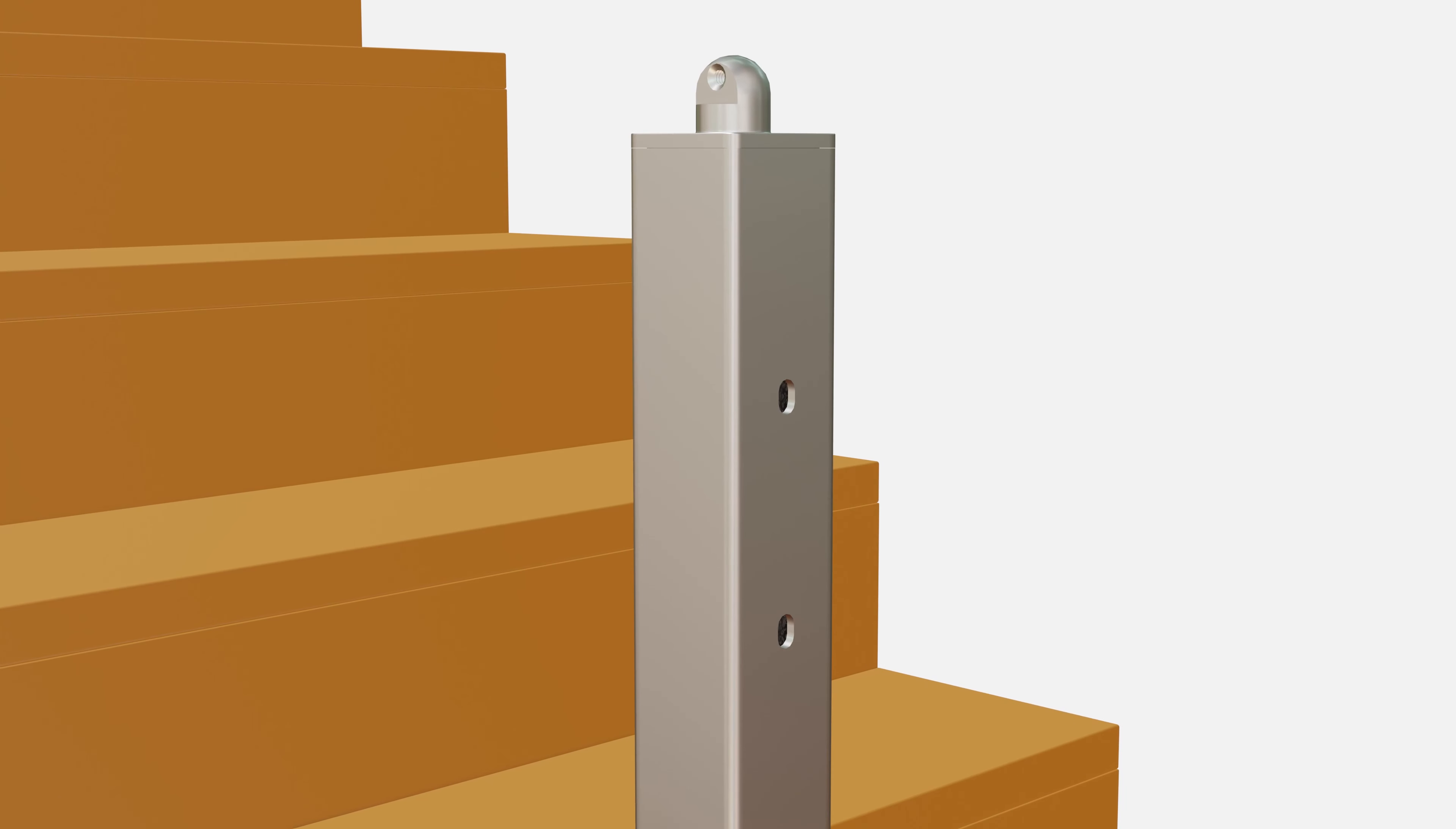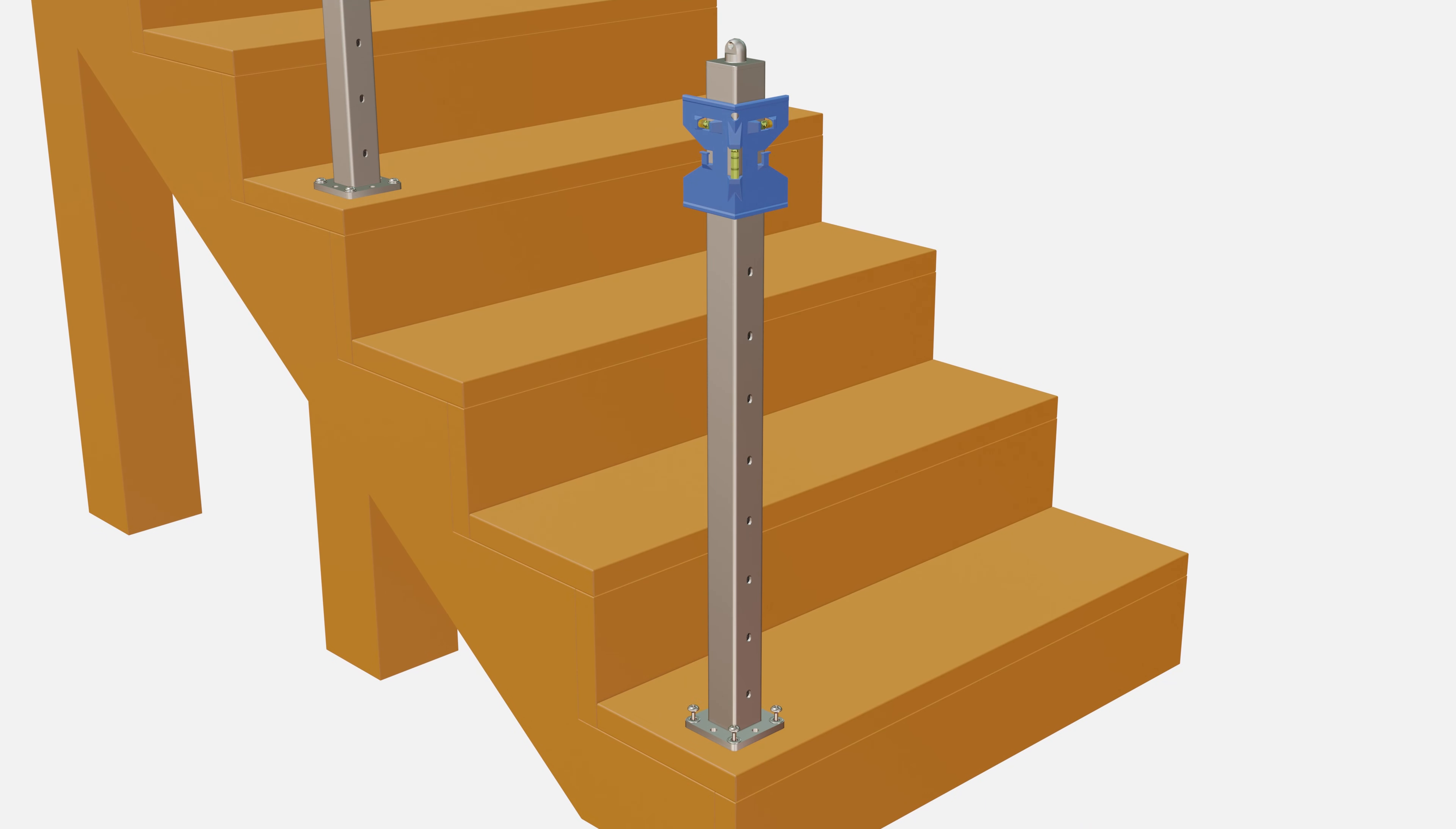When your post is fastened down, attach the post level to the top of the post. While it will work on any height of the post, the top of the post will give you the most accuracy.